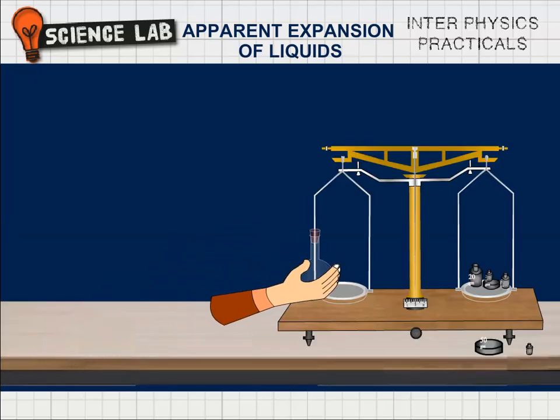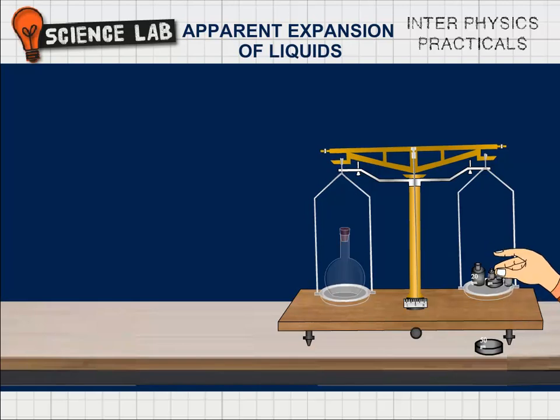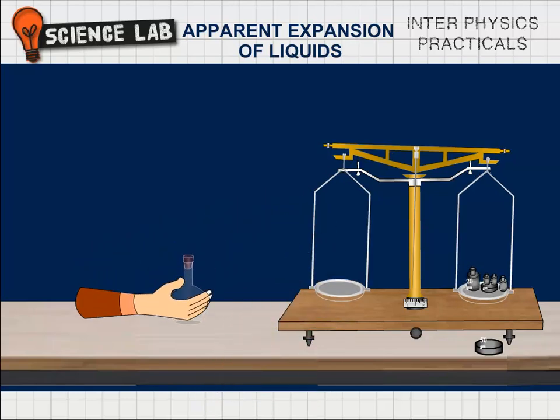Measure the mass of clean dry specific gravity bottle with a physical balance. Mass of empty specific gravity bottle W1 is 39 grams. Do the physical balance experiments to know the detailed working of the physical balance.